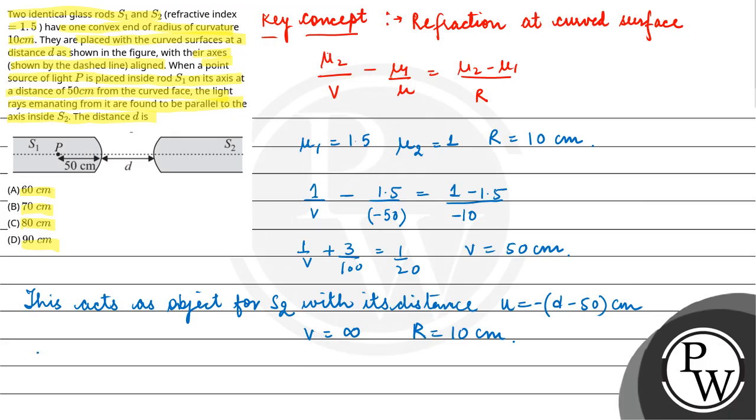So now using the formula: 1 upon infinity minus 1.5 upon minus (d minus 50) equals 1 minus 1.5 upon 10. So here the value of d minus 50 equals 20, giving d equals 70 cm.